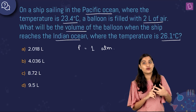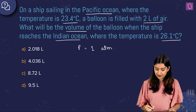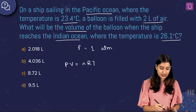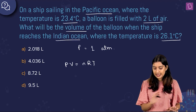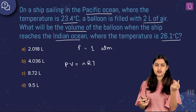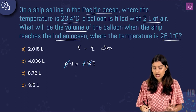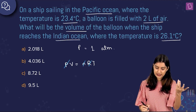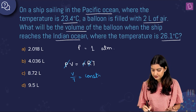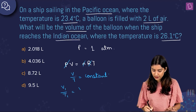Since pressure is constant and temperature is changing, volume will change accordingly. We apply the ideal gas law: PV = nRT. The number of moles in the balloon is not changing, so n is constant. Pressure is constant, and R is the universal gas constant — also a constant. This simplifies to V/T = constant.